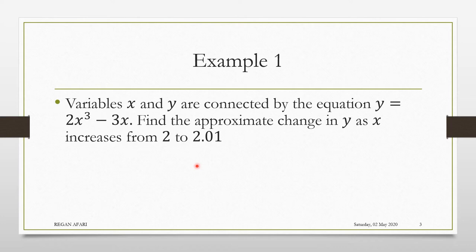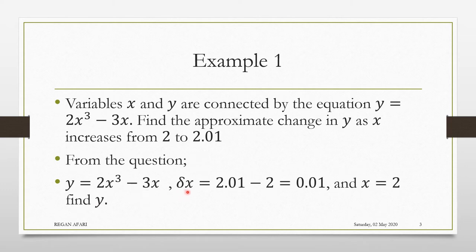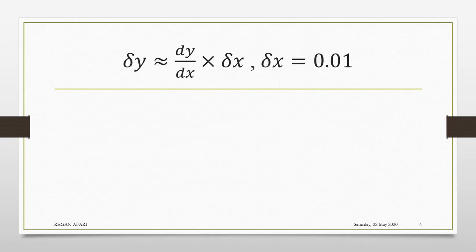Always extract the data from the question — it will really help you. From the question, we have the curve. We have the small change in x, which is called delta x — that is the ending minus the beginning, so that small change is 0.01. We also know that x, the original x, was 2. And what they want us to find is the small change in y. We know that delta y equals dy/dx times the small change in x, where delta x is 0.01.